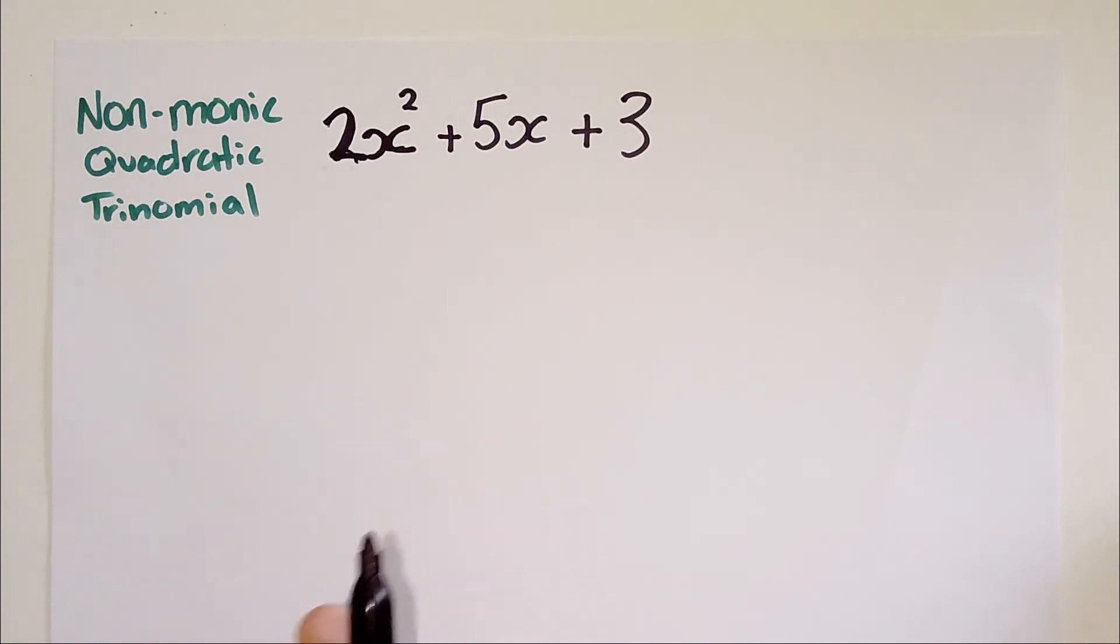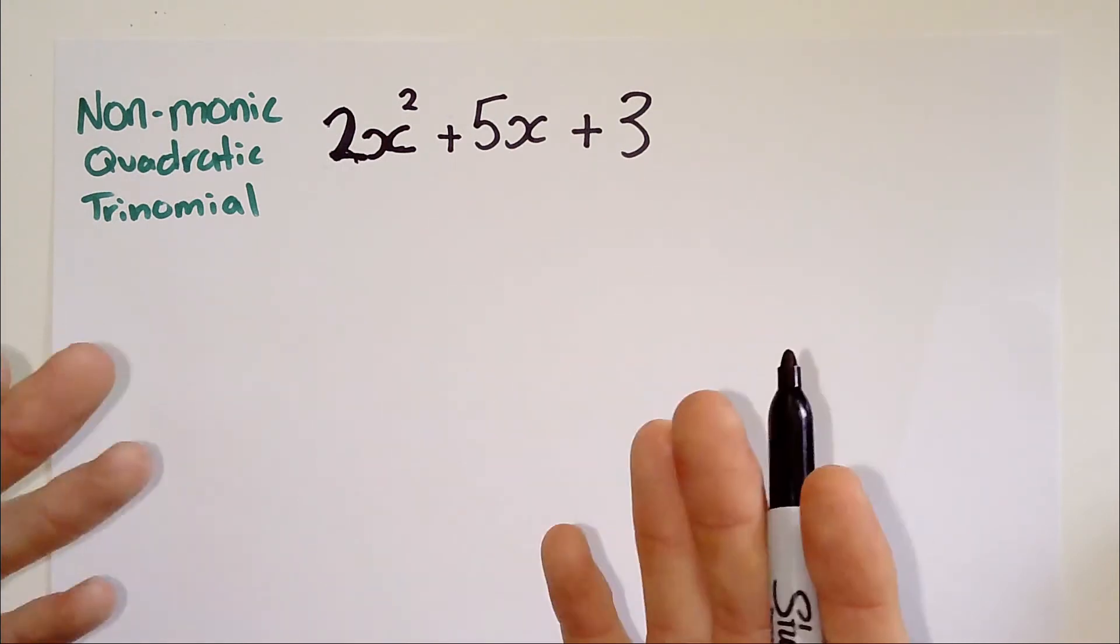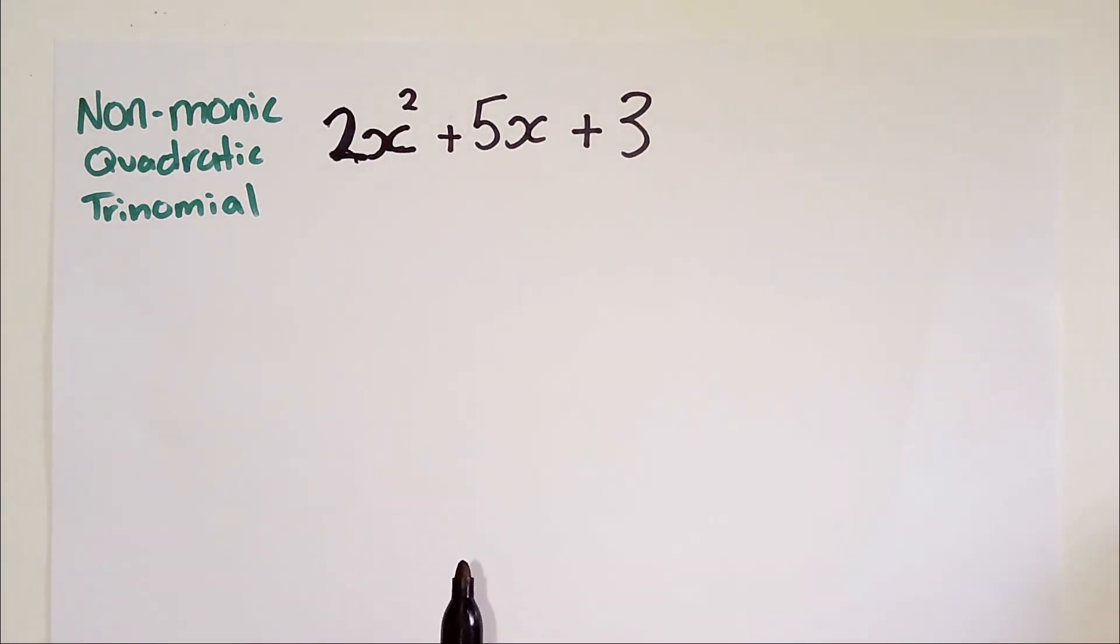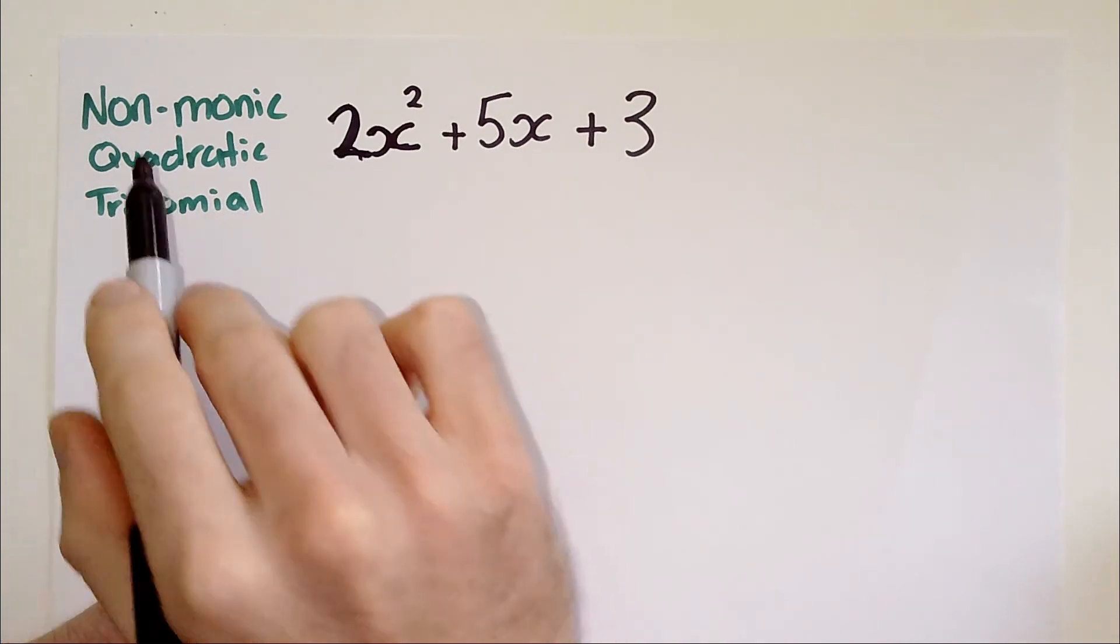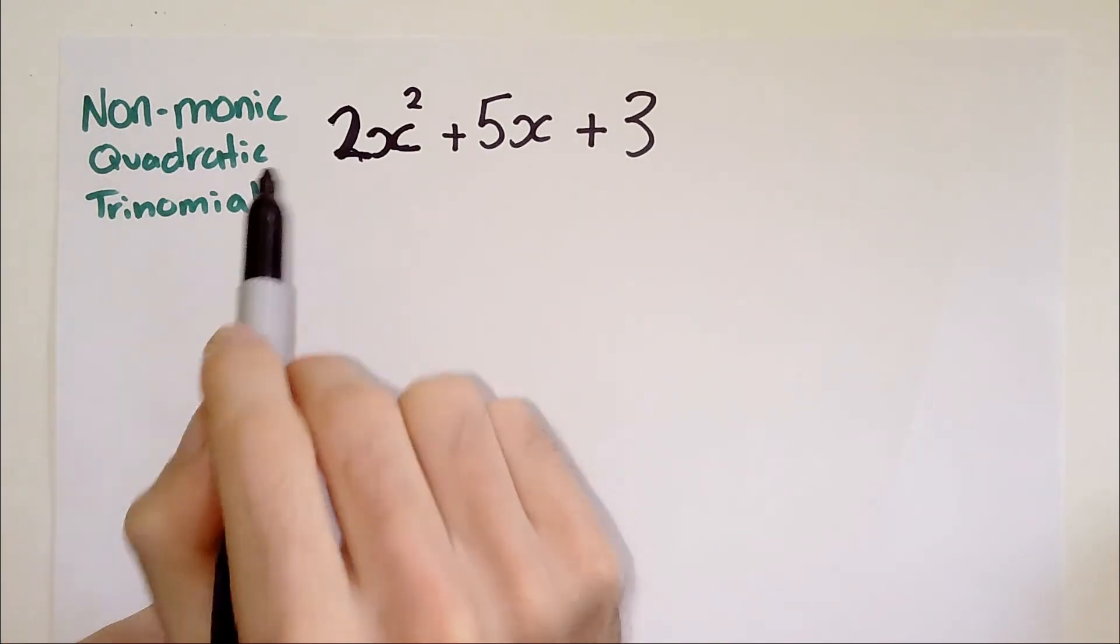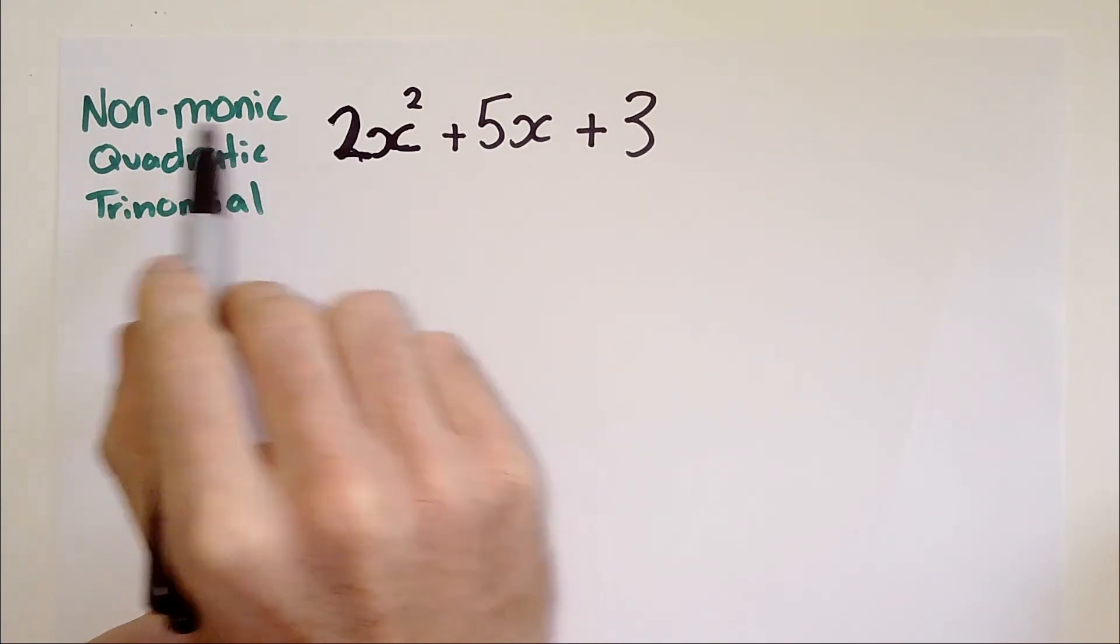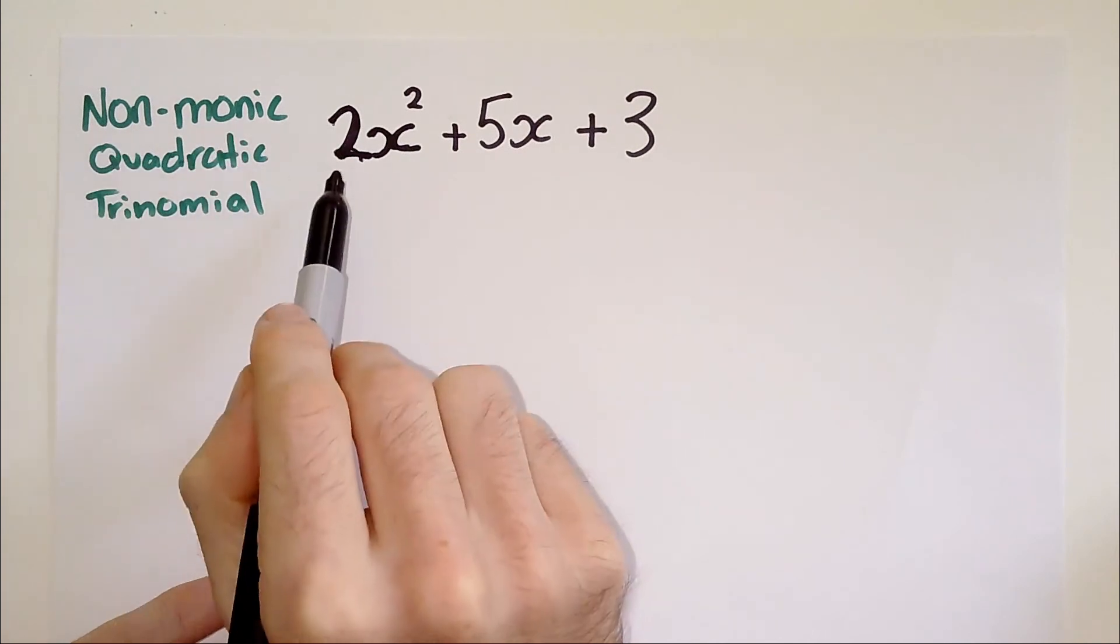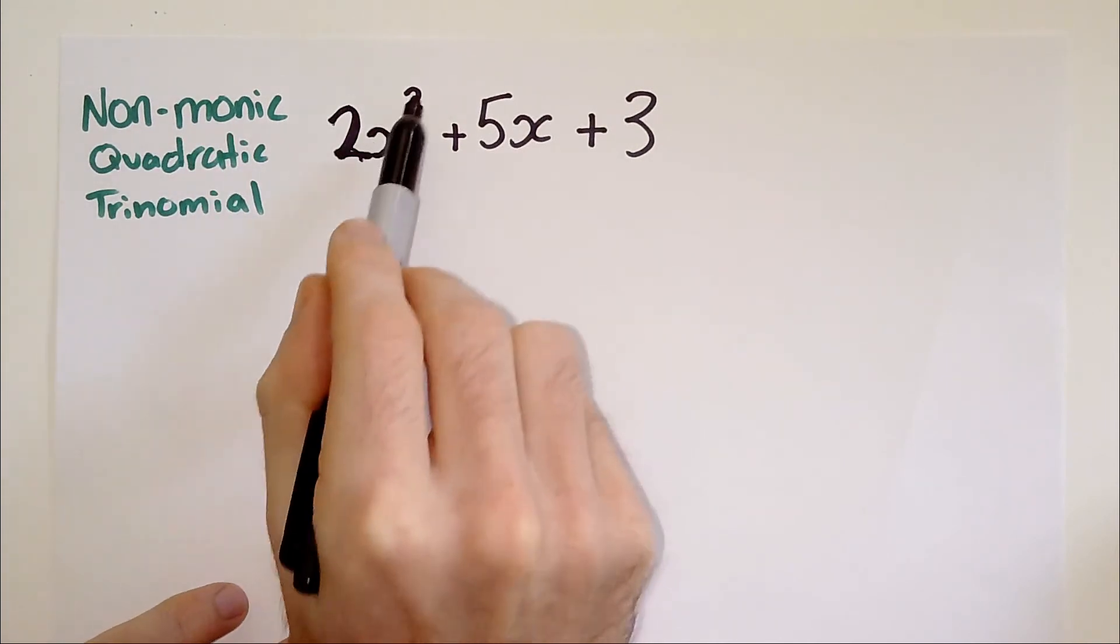So assuming that, if you get this in an exam and it asks you to factorize something like this, you just assume that PSF will work because the factors are rational, that is, that they are either fractions or whole numbers. Now, just remember also that non-monic, monic means one, so non-monic means a number other than one before the x squared term.